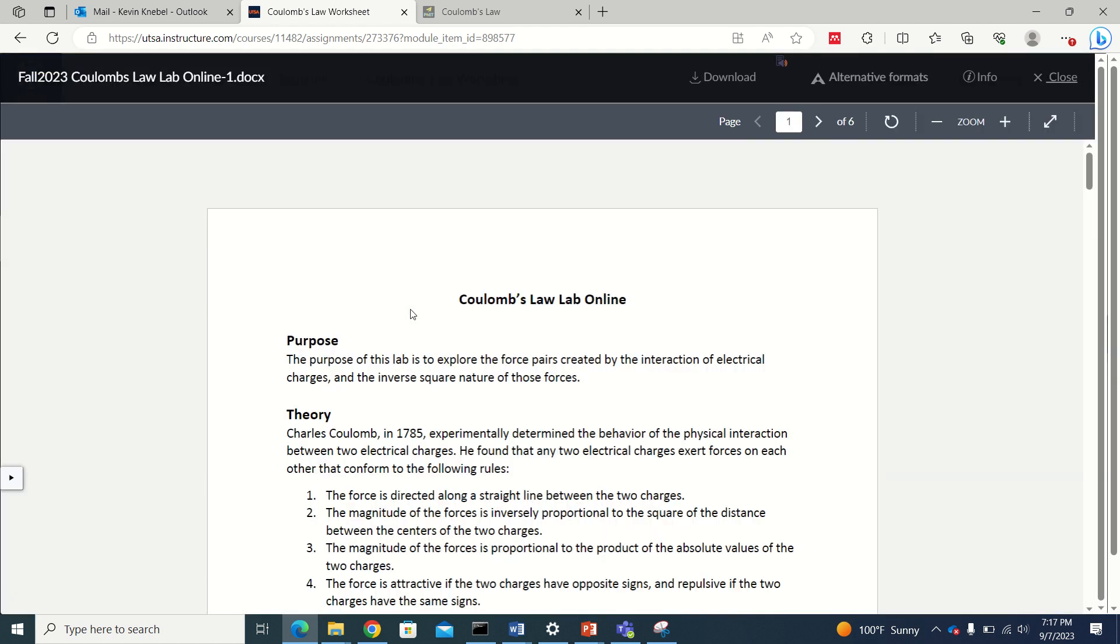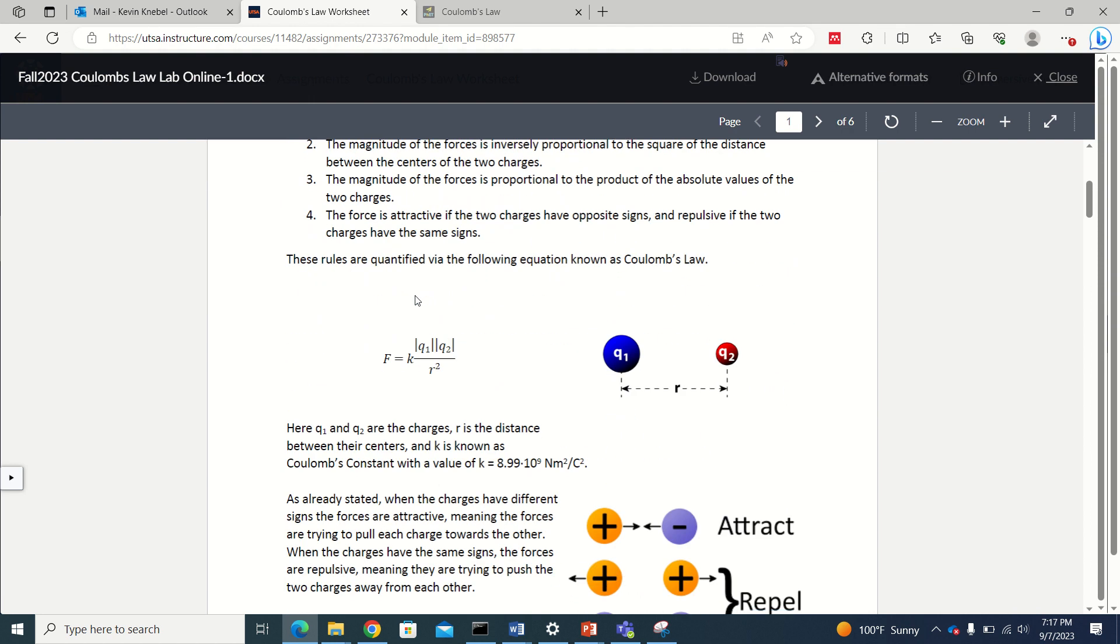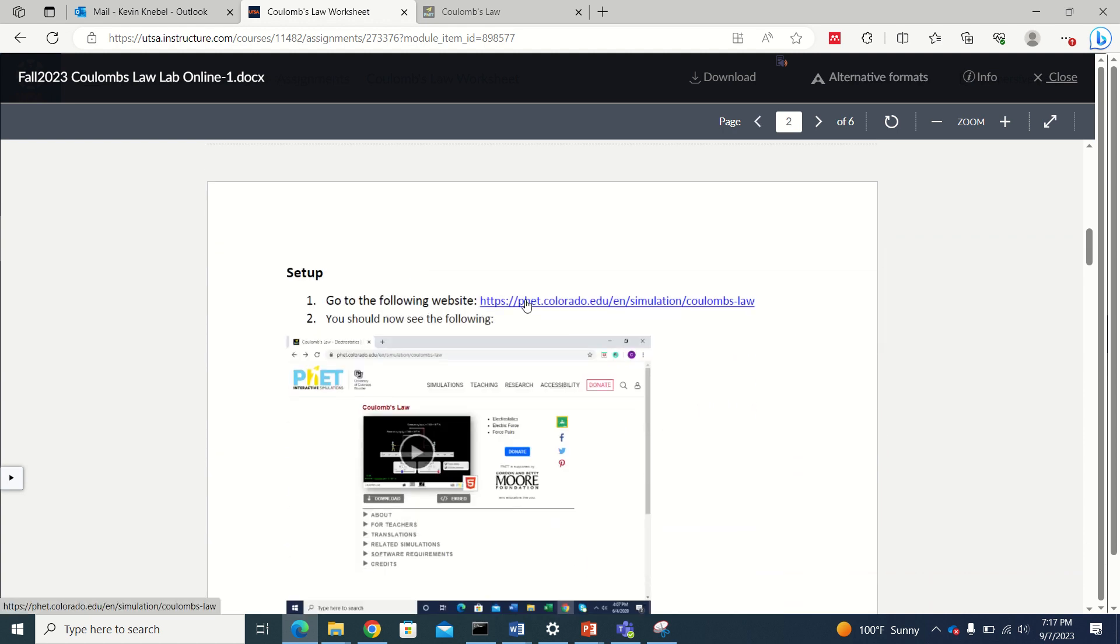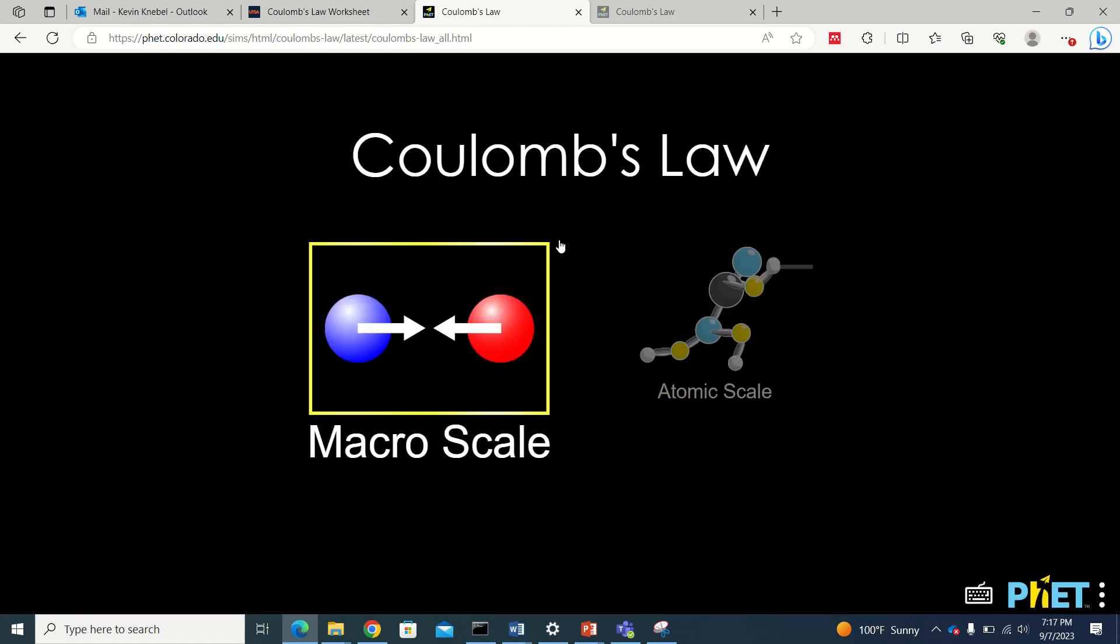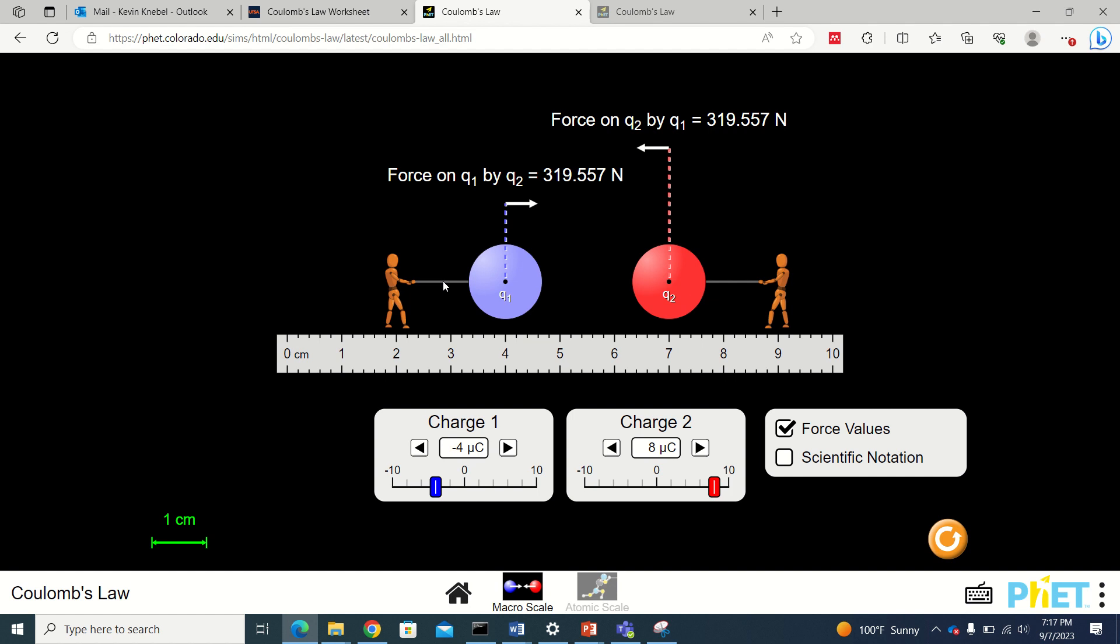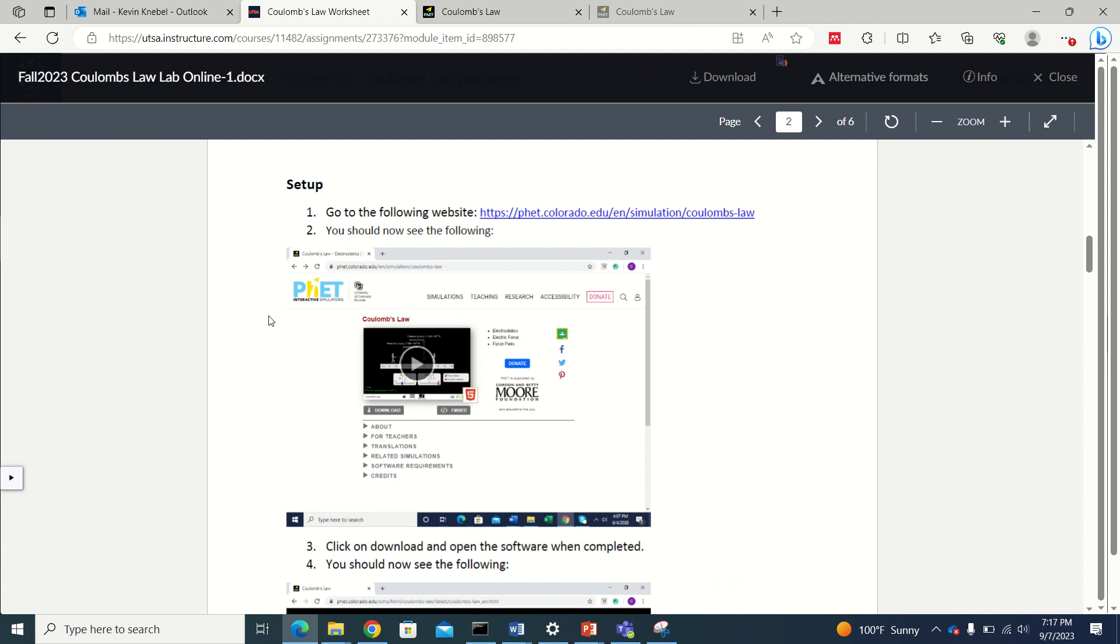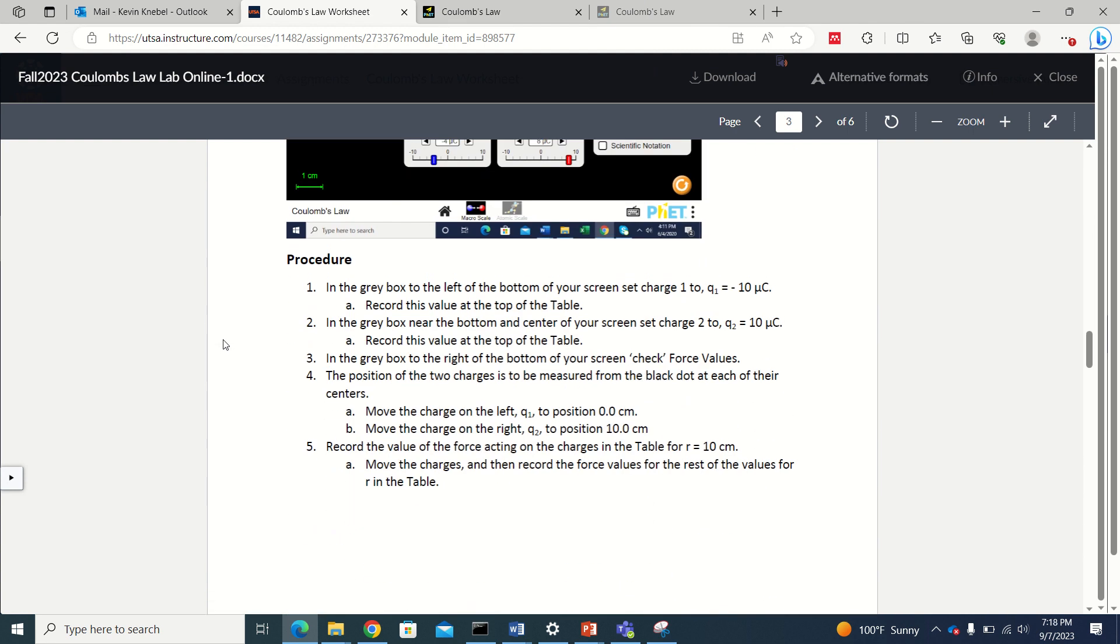You're going to download this worksheet, and the first part of the worksheet is theory, but we already talked about all the theory. Then they're going to direct you to this website. This is where you're going to perform your simulations. So you click this. It should link you to the website. You don't have to download anything. It should run in the browser. So you just click play, and it'll load the simulation, and you just get to this screen right here. Now let's go back to the worksheet. In the worksheet, they're going to give you step-by-step instructions what to do. This is your responsibility. I'm not going to read all the instructions for you. You're expected to read the procedure and follow the procedure.